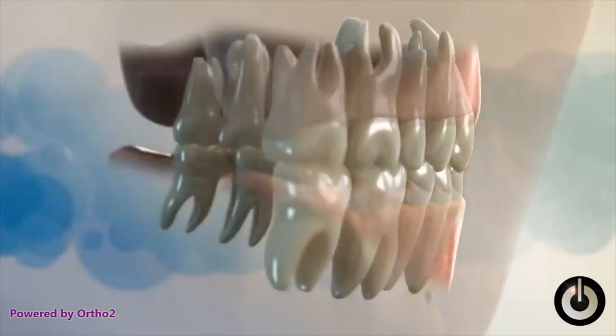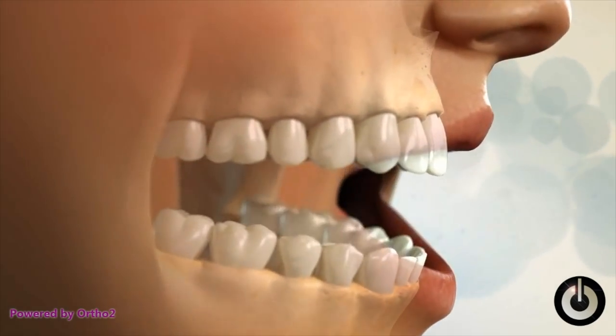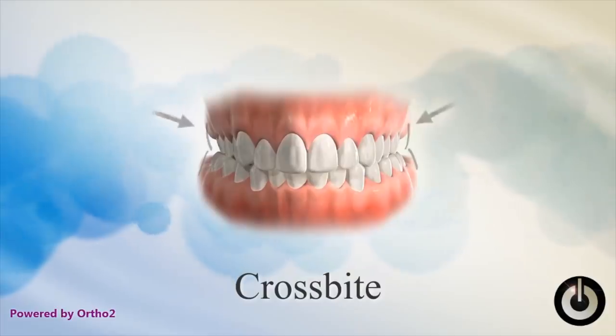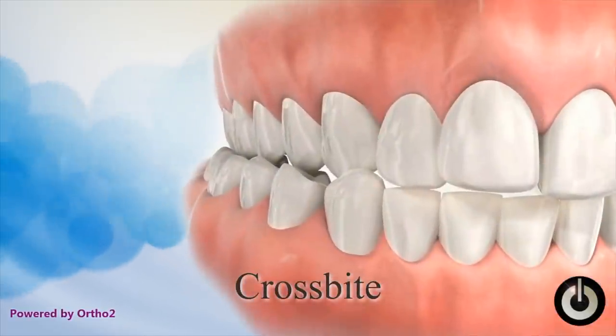The first thing I want to talk about are crossbites. There are crossbites of the front teeth, which are called underbites, and crossbites of the back teeth, which are called posterior crossbites. This can happen on one or two sides of the jaw. Simply put, your upper teeth should always be sitting outside of your lower teeth all the way around. If a tooth or group of teeth are inside the lower teeth, that's called a crossbite — it's not a stable or functional bite and can lead to early wear.